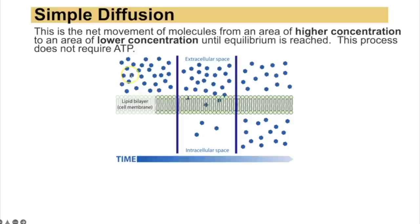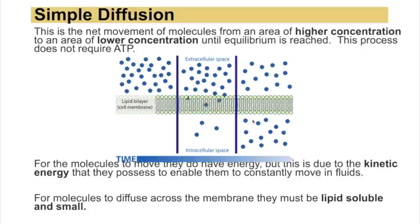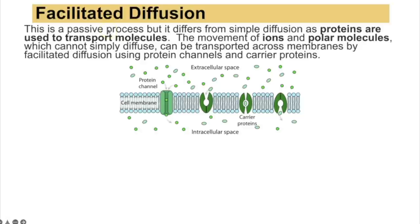Simple diffusion is the net movement of molecules from an area of higher concentration to lower concentration until equilibrium is reached. This does not require ATP — molecules move using their own kinetic energy. For molecules to diffuse across the membrane they must be lipid-soluble and small. If not, facilitated diffusion is used instead. Facilitated diffusion is still passive (movement is still down the concentration gradient) but molecules must diffuse through proteins rather than directly through the phospholipids.